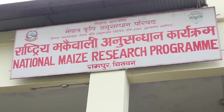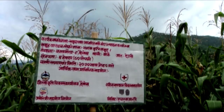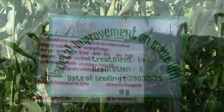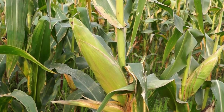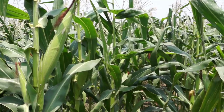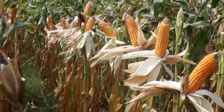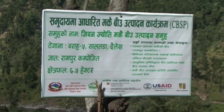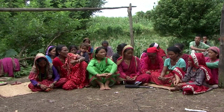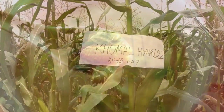National Maize Research Program in collaboration with CIMIT and other stakeholders has developed a qualitative variety of maize called Posilomakai, which contains tryptophan and lysine — essential amino acids crucial for infants and pregnant women. In addition, NMRP has developed various programs on community-based production of maize seed, popcorn, baby corn, and hybrid maize.